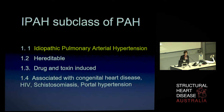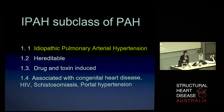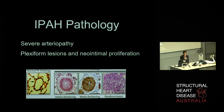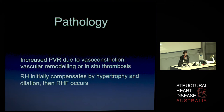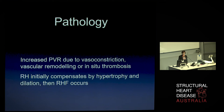To have idiopathic pulmonary arterial hypertension, you need to be in Group 1 of the classification system. Other groups apply to left heart disease, pulmonary hypertension due to lung disease or hypoxia, chronic thromboembolic pulmonary hypertension, or a mix. Within pulmonary arterial hypertension, only a small subclass have idiopathic PAH — sometimes it can be inherited, certain drugs and toxins can cause it, or it can be associated with congenital heart disease, HIV, or schistosomiasis. The pathology is a severe arteriopathy with intimal and medial thickening and plexiform lesions — the hallmark of the condition — with vasoconstriction, vascular remodelling, and in-situ thrombosis all increasing pulmonary vascular resistance. The right heart initially compensates by dilating and hypertrophying, but eventually right heart failure occurs and this is what ends up killing these patients.